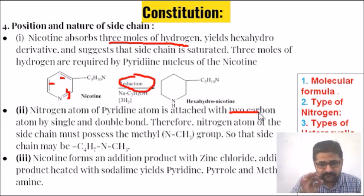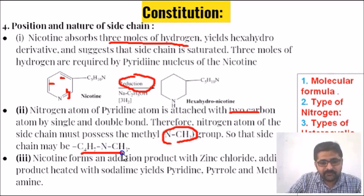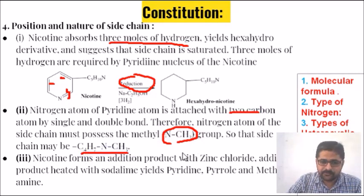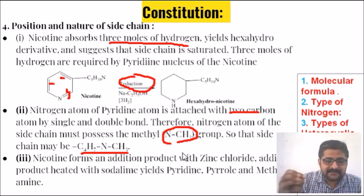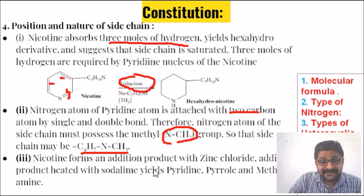The nitrogen atom of pyridine is attached by single and double bonds, so the nitrogen atom of the side chain must possess an N-methyl group. Therefore, the side chain may be C₄H₇N with an N-methyl group. From this, the side chain must be C₄H₇N-methyl. Nicotine also forms an addition product with zinc chloride.